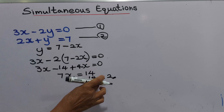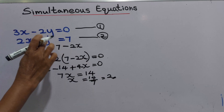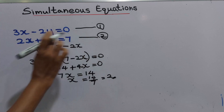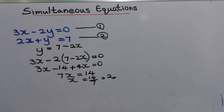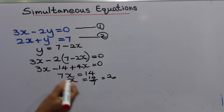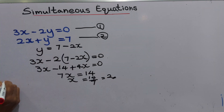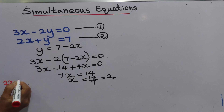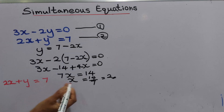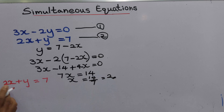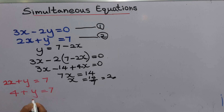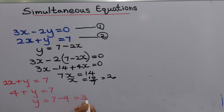Therefore x equals 14 divided by 7, which gives x equals 2. Now we can find y by substituting x equals 2 into equation 2: 2x plus y equals 7, so 4 plus y equals 7, giving y equals 3. We have found x equals 2 and y equals 3.